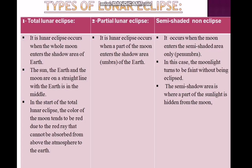If the Moon enters completely into the semi-shaded area, this phenomenon is called a semi-shaded non-eclipse. It occurs when the Moon enters the semi-shaded area completely. In this case, the moonlight becomes faint without the Moon being fully eclipsed. The semi-shadow area is where part of the sunlight is hidden from the Moon.